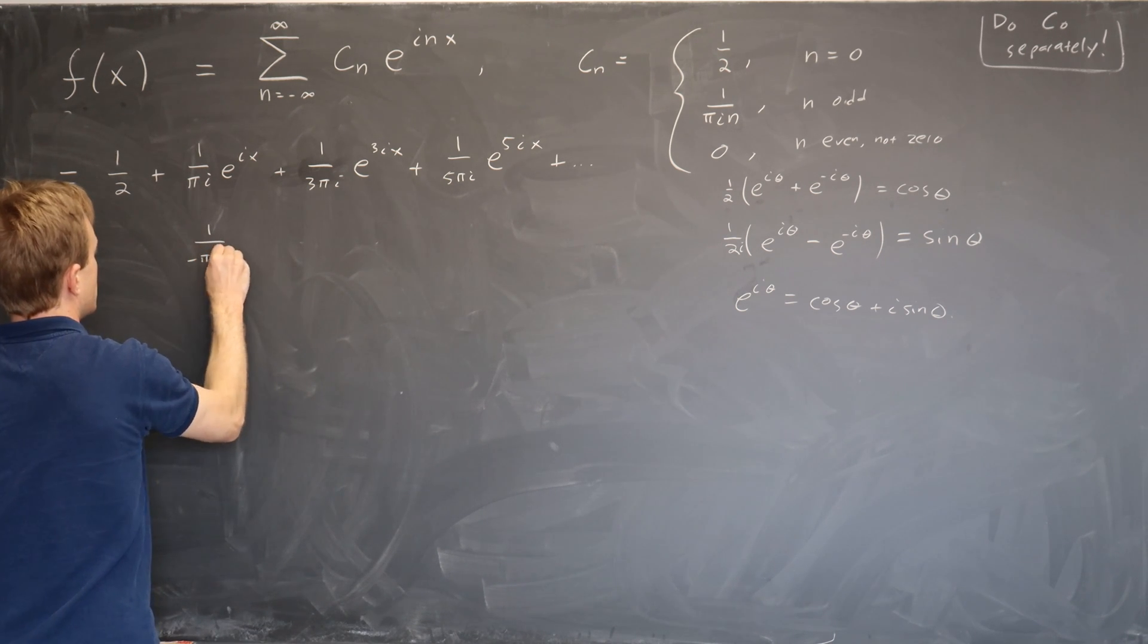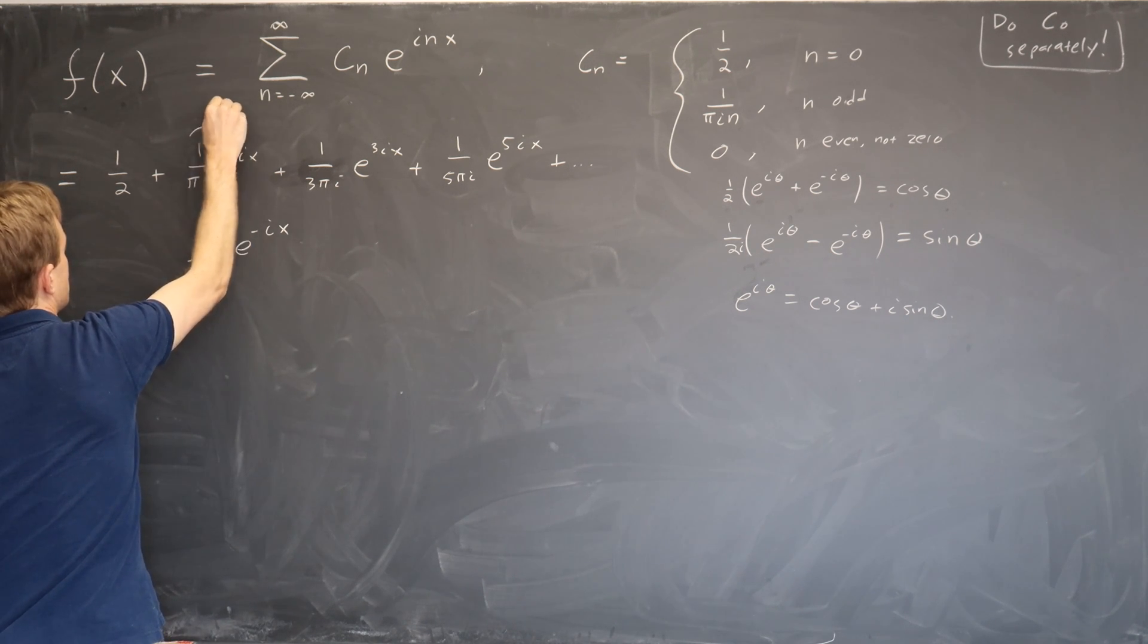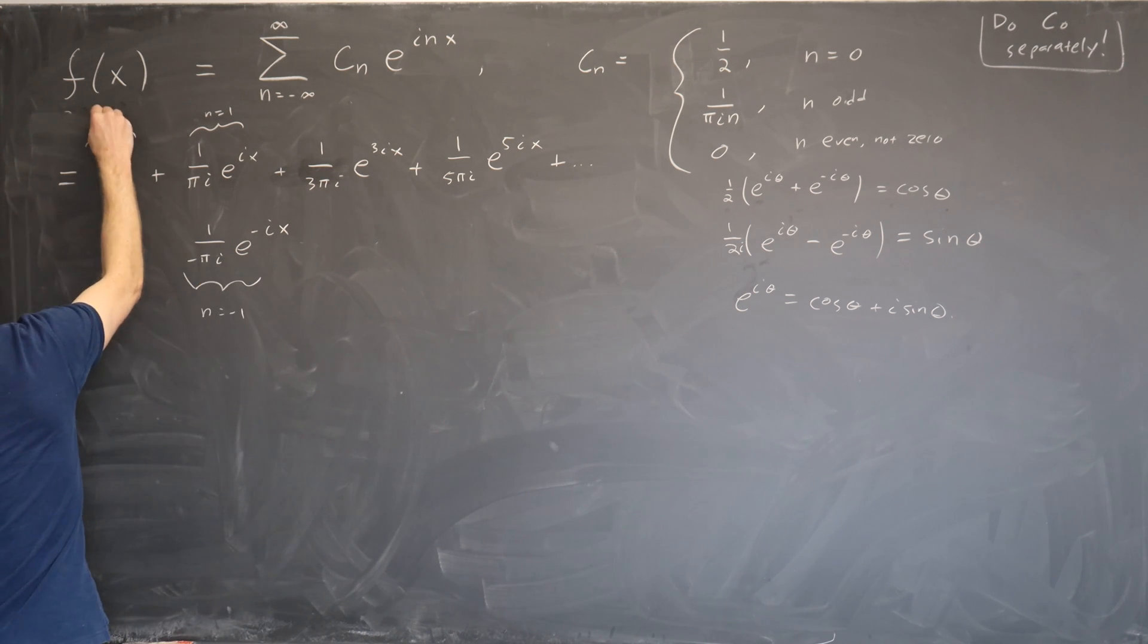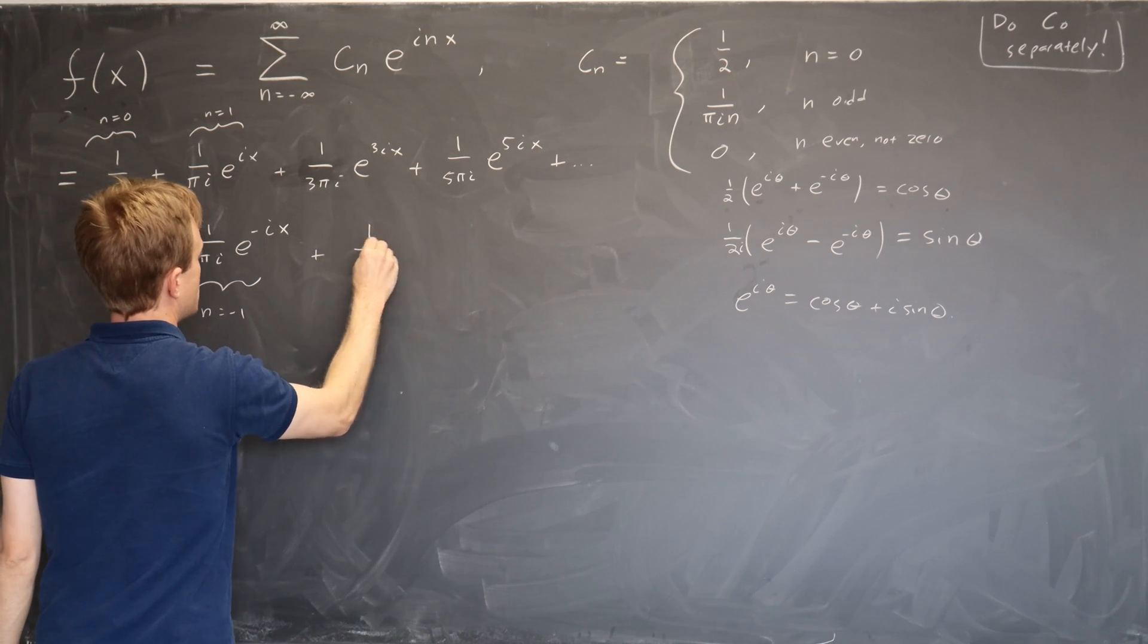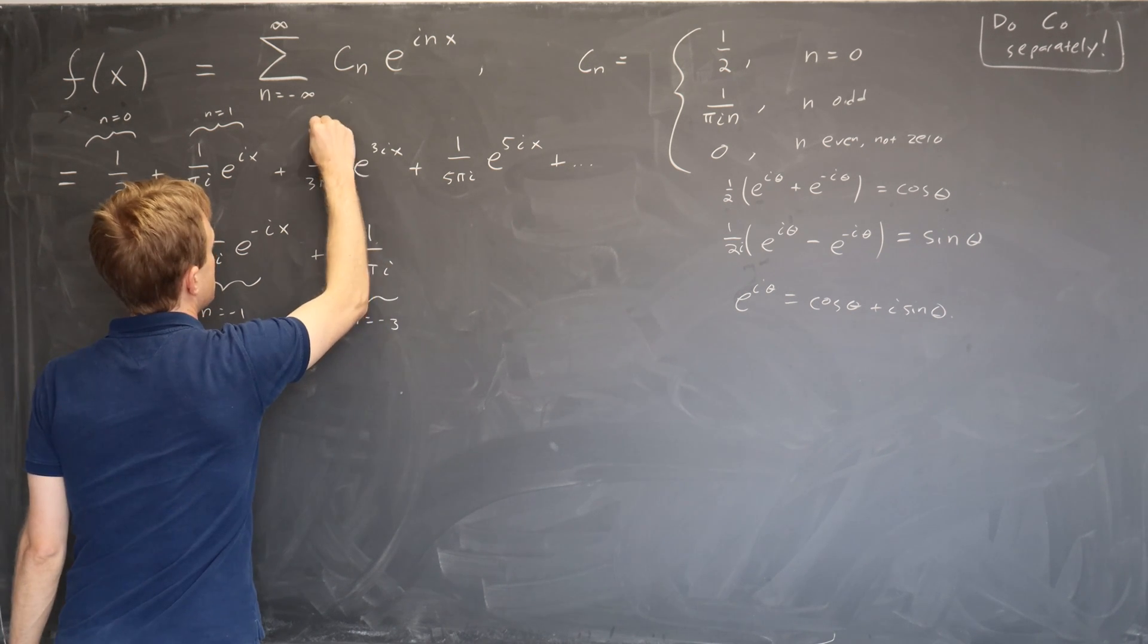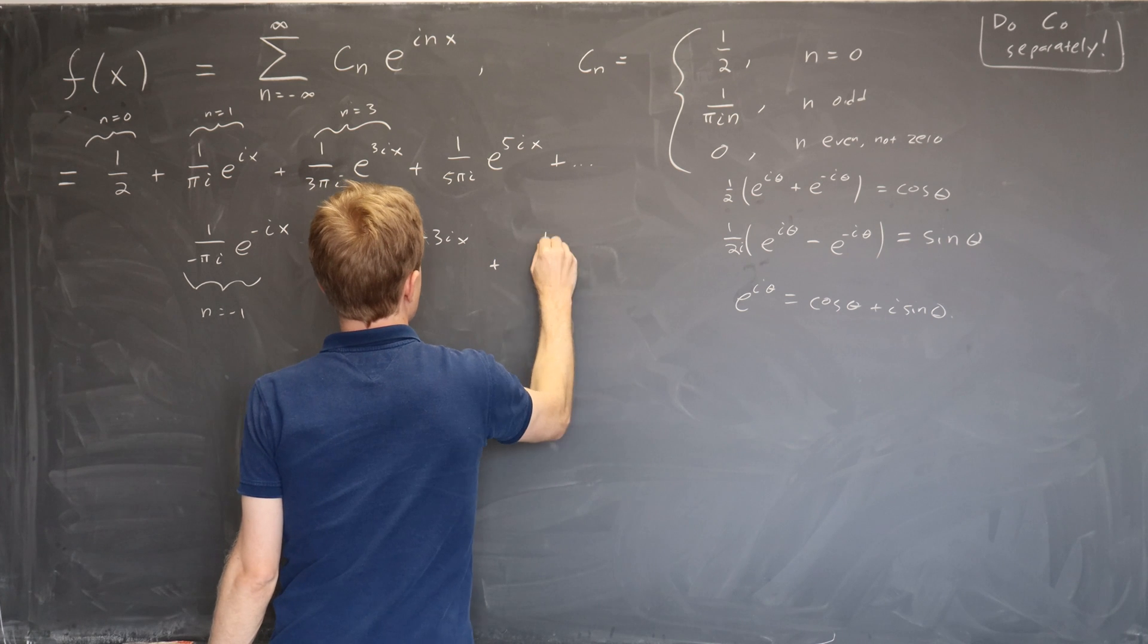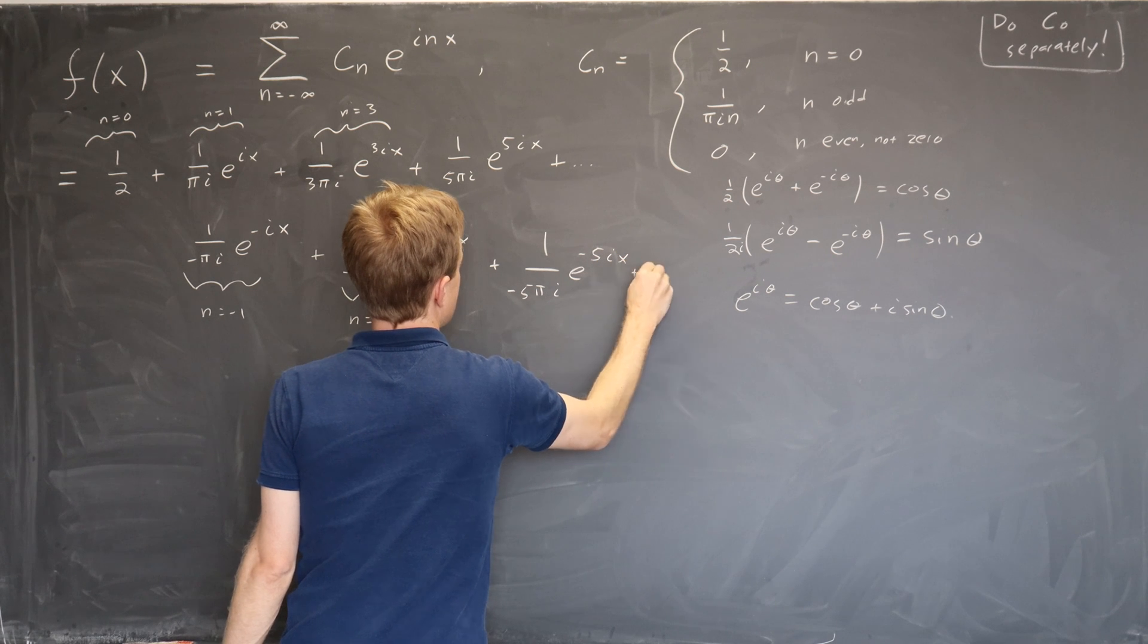And now let's do the negative ones: 1 over minus pi i e to the minus ix. So this term here was n equals 1, this term here is n equals minus 1, they're both odd numbers. This term here is n equals 0. What other negative numbers do we have? We have 1 over minus 3 pi i from n equals minus 3, n equals plus 3 up here, e to the minus 3ix. Let's do one more, e to the minus 5 pi i, e to the minus 5ix, etc.